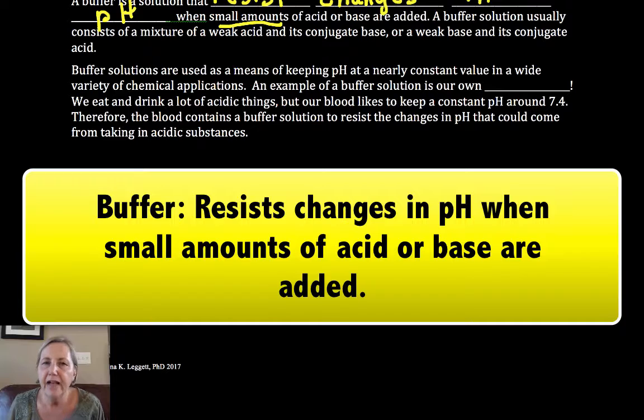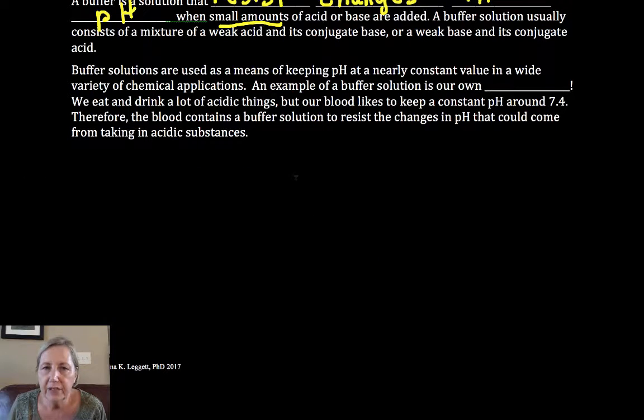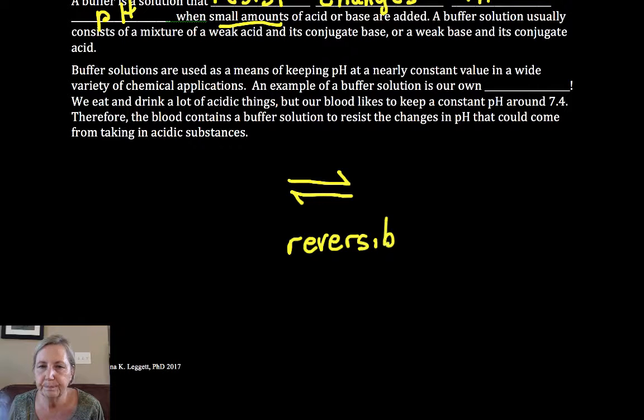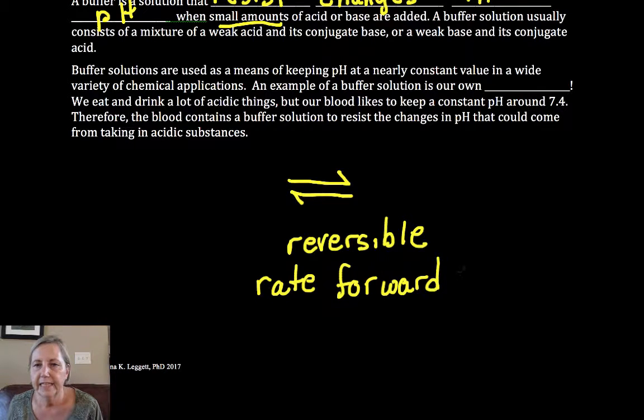Now to have a buffer what we have to be able to do or set up is a system that's in equilibrium. Equilibrium means the reaction is reversible and when it's reached equilibrium our rate forward is equal to our rate of the reverse reaction.